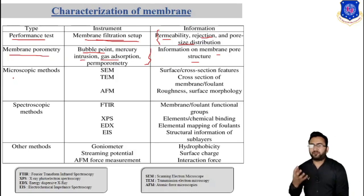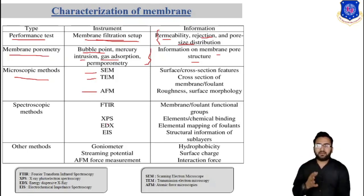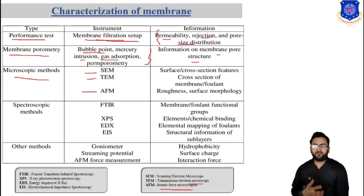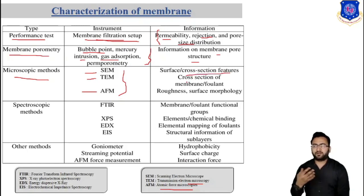Various microscopic methods are also used, such as SEM (scanning electron microscopy), TEM (transmission electron microscopy), and AFM (atomic force microscopy). Using these microscopy techniques, we can characterize the surface, cross-section features of the membrane, foulant, roughness of the membrane, and surface morphology.